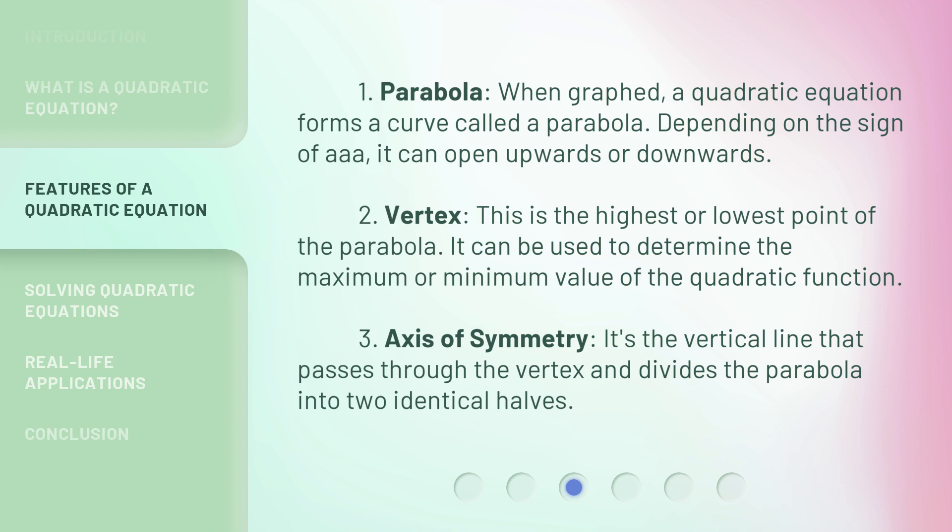3. Axis of symmetry. It's the vertical line that passes through the vertex and divides the parabola into two identical halves.